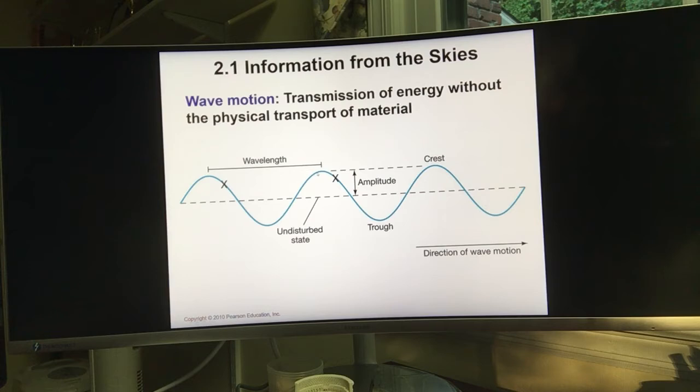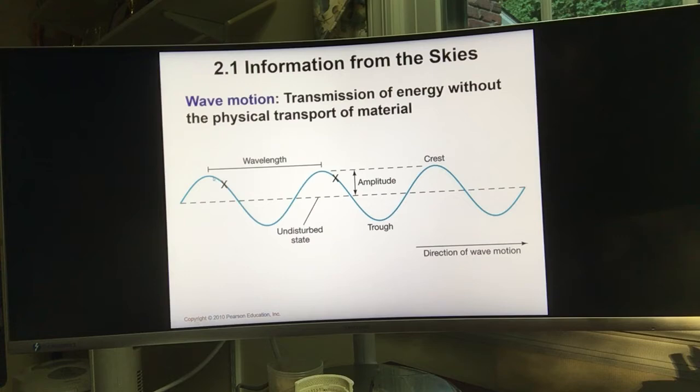Another concept is wavelength. Wavelength is the distance between two adjacent crests, or two adjacent troughs — it can be measured from one crest to the next, or from one trough to the next.